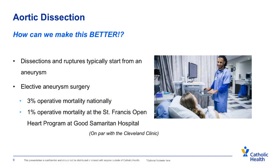Dissections typically start from aneurysms. But if we can tackle an aneurysm before dissection in an elective fashion, the risk of open surgery across the United States is around 3%. At our program, our risk is around 1%, which is on par with some of the top institutions across the United States. This is something we've been able to leverage because of our expertise through the St. Francis Heart Programs.